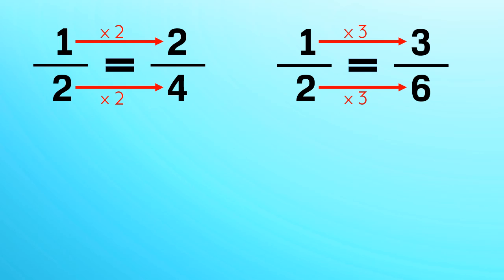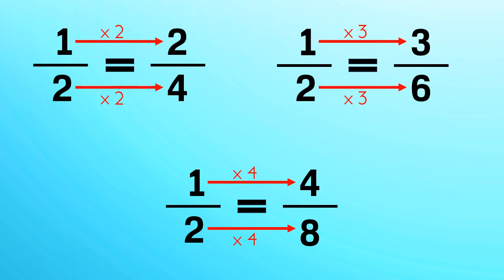Let's consider it once again. We have 1 by 2. Let's multiply both numerator and denominator by 4. Then we get 4 by 8, which is also same as 1 by 2.